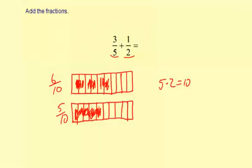Okay, so now here we have 6 tenths plus 5 tenths. So if we add those together, it's going to be 11 tenths. Okay, so that's our answer.